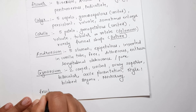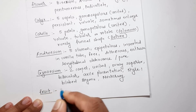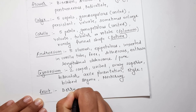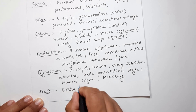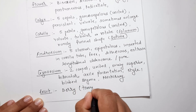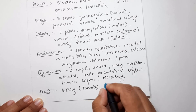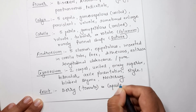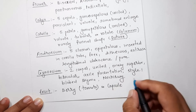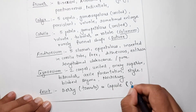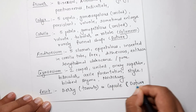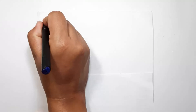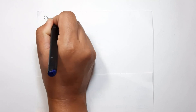The fruit is either a berry, as commonly found in tomato, or a capsule, as in the case of Datura.